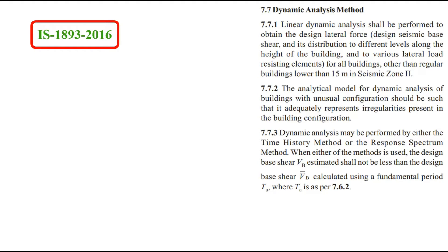As per IS 1893-2016, clause 7.7 represents the dynamic analysis method, in which it is stated that linear dynamic analysis shall be performed to obtain design lateral forces, shear and its distribution to different levels along the height of the building for all buildings — all other buildings other than regular buildings lower than 15 meters in seismic zone 2.